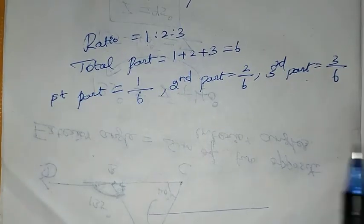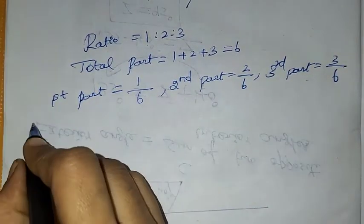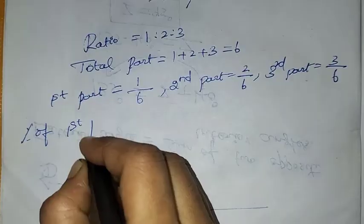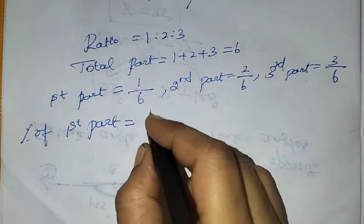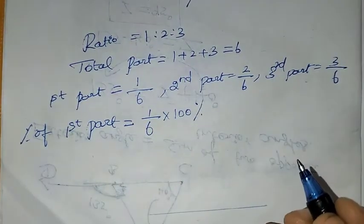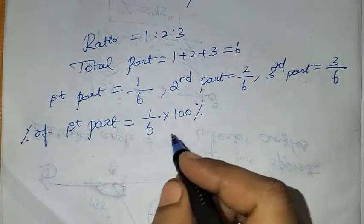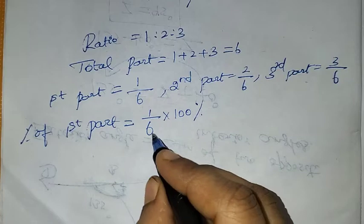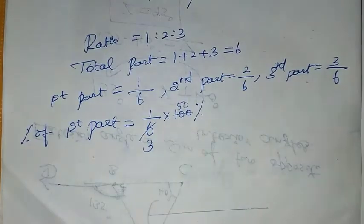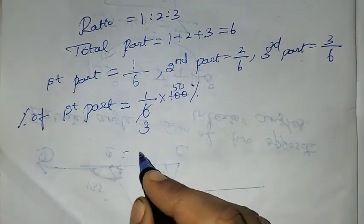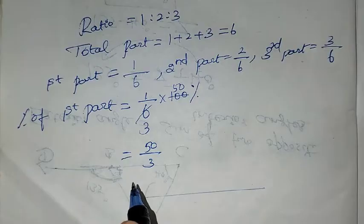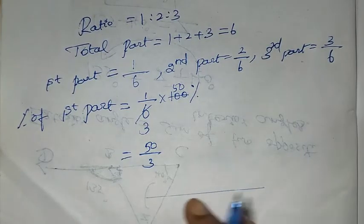Percentage of first part is 1 by 6 times 100%. That's 1 into 50, which is 50 by 3 percentage. We need to convert this to mixed fraction.